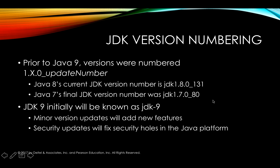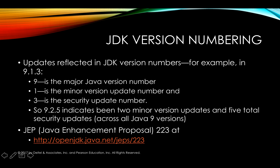As of Java 9, the JDK will initially be known as JDK-9, and then there will be minor version updates and security updates, and the numbering scheme for that has changed. For example, once we get to JDK 9.1.3: 9 is the major Java version number, 9.1 is a minor point release update number, and 3 is the security update number. Similarly, for 9.2.5: 9 is the major update, 2 is the minor update typically with a patch, and 5 is the total number of security updates across all point releases of Java 9 throughout its lifecycle.